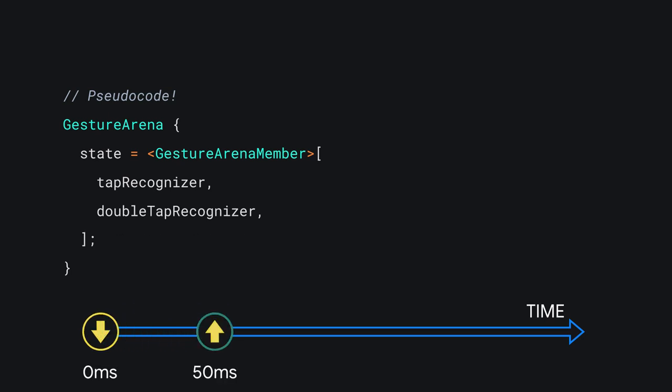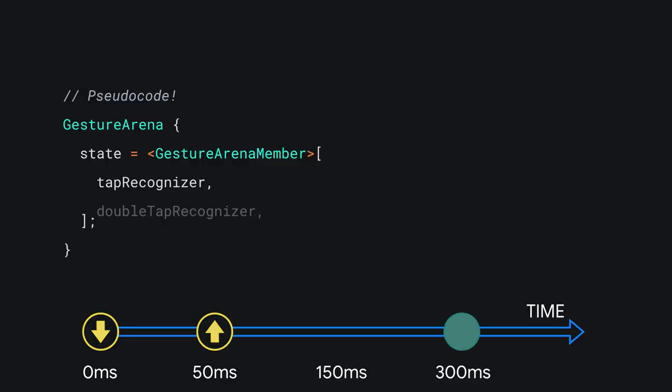Then a mere 50 milliseconds later, a pointer up event appears, causing the long press recognizer to bow out long before it ever reaches its 500 millisecond victory threshold. Tap recognizer and double tap recognizer, however, are both still in the running. Then it's all quiet on the gesture front until the 300 millisecond mark, when the double tap recognizer's timer elapses, causing it to admit defeat. The gesture arena has reached one of its victory conditions — if there's ever only one recognizer left, that recognizer is the winner. Our tap recognizer takes home the trophy and Flutter calls its onTap method. Note that because our gesture detector has registered listeners that don't make up their mind for up to half a second, our single tap listener had to wait a while before it got called. You can test this yourself in the DartPad linked below — toggle whether the gesture detector's onTap method is the only parameter and notice the tiny change in latency.